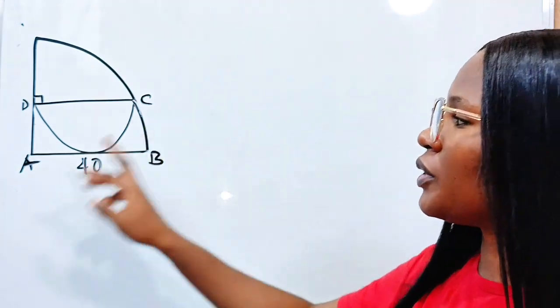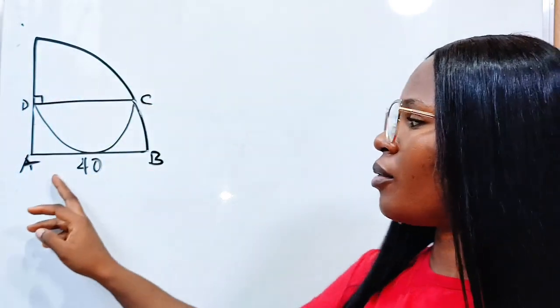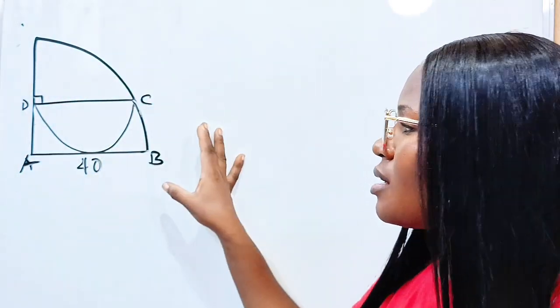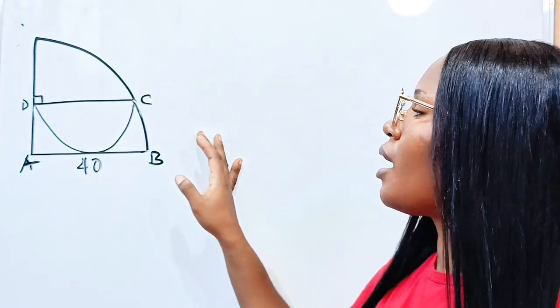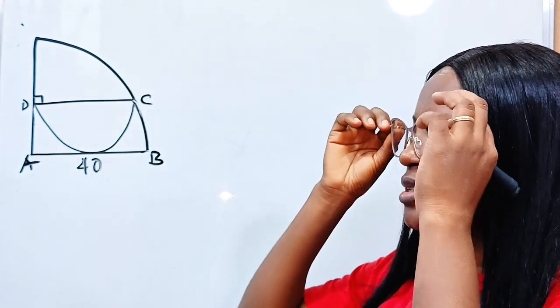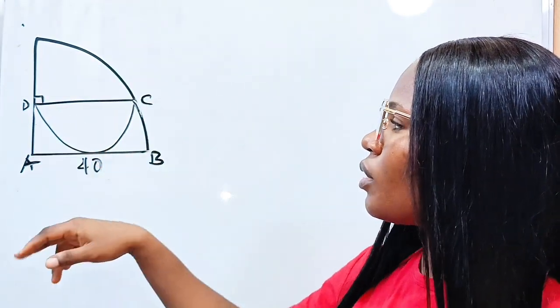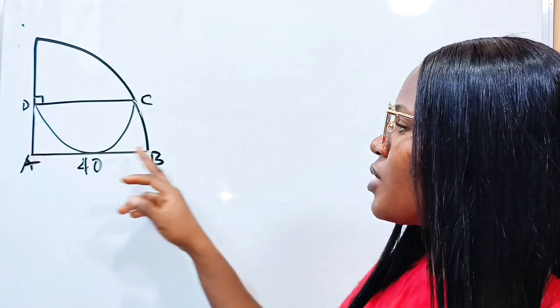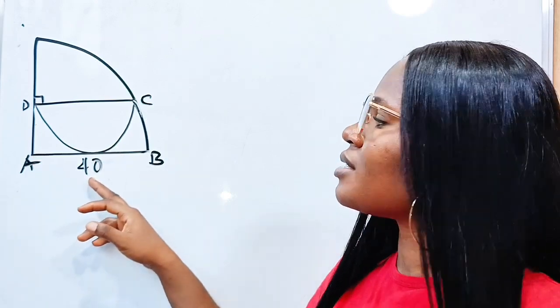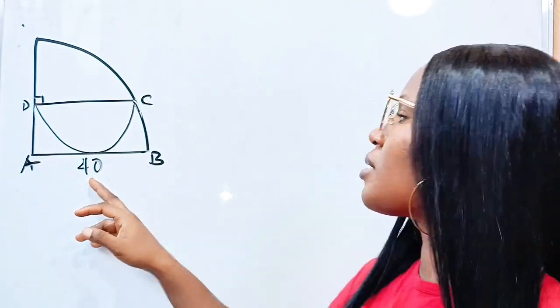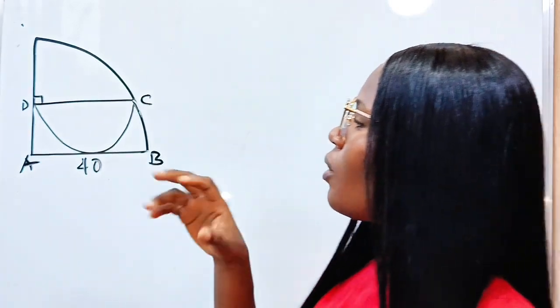Please note this is not drawn to scale. This is the quarter of a circle, meaning this is a quadrant, and inside the quadrant is inscribed a semicircle. From here to here is 40 units.